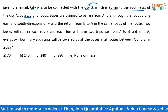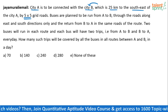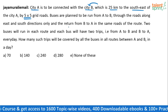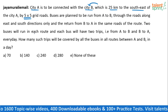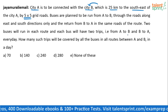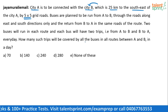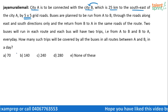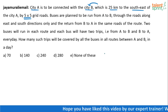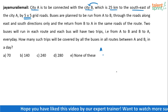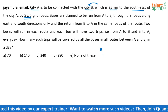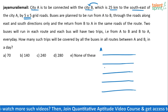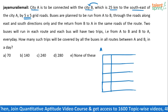There are five vertical roads and five horizontal roads connecting City A to City B. Now, buses are planned to be run from A to B through the roads along east and south directions only, and they return from B to A along the same roads. Two buses will run in each route, and each bus will have two trips — from A to B and B to A — every day. How many such trips will be covered by all the buses in all routes between A and B in a day?